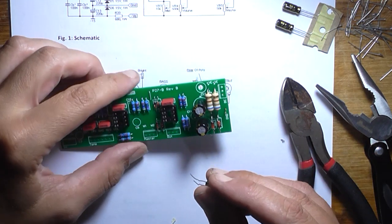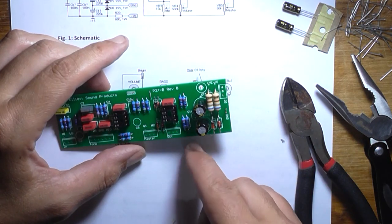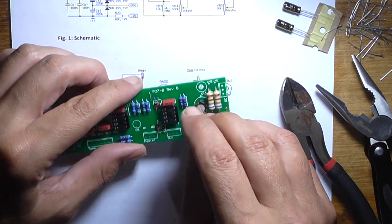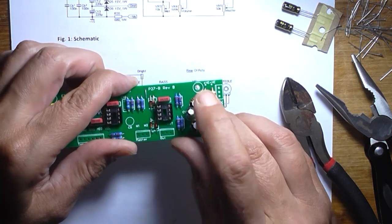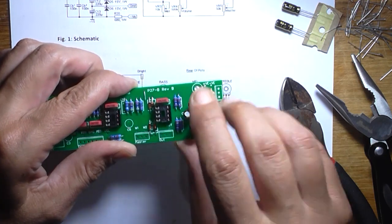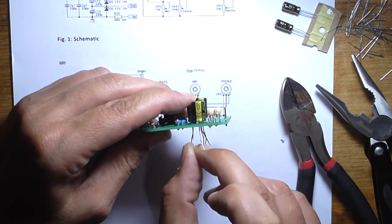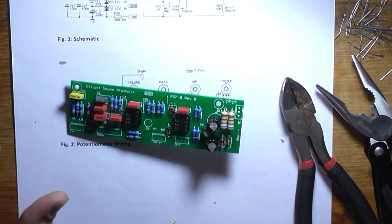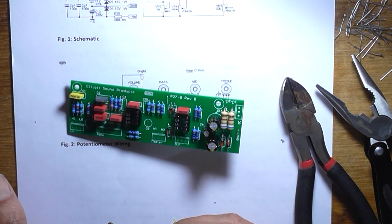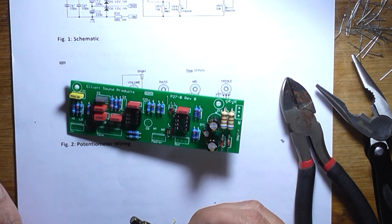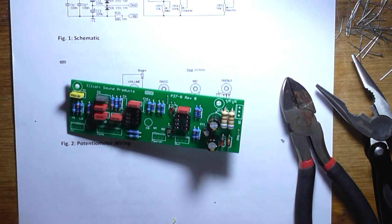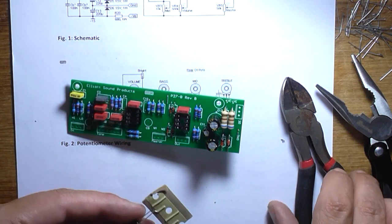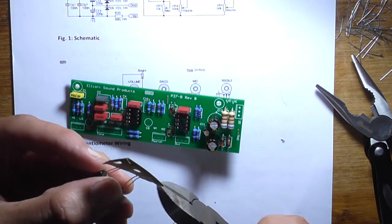I've only got two more capacitors to go, two 1 microfarads, and that's C8 and C3. Can't see where they are either. Those two there which are out of shot. Might make this easier and just cut them off the tag. I really hate pulling them off the tag because it's annoying.